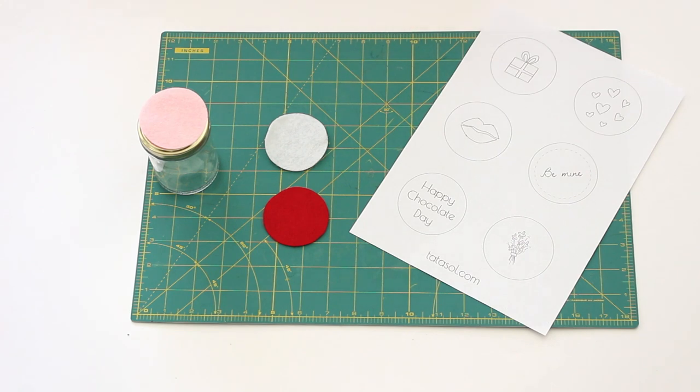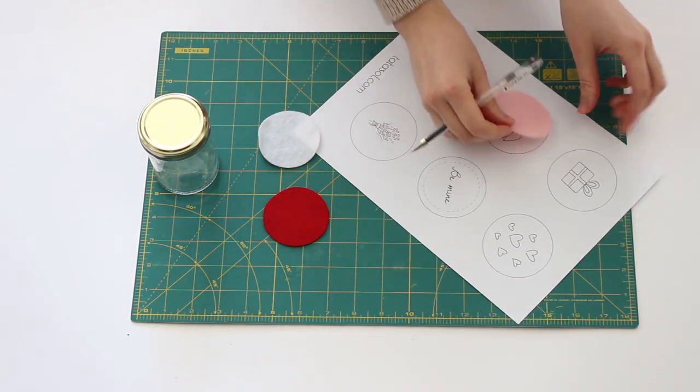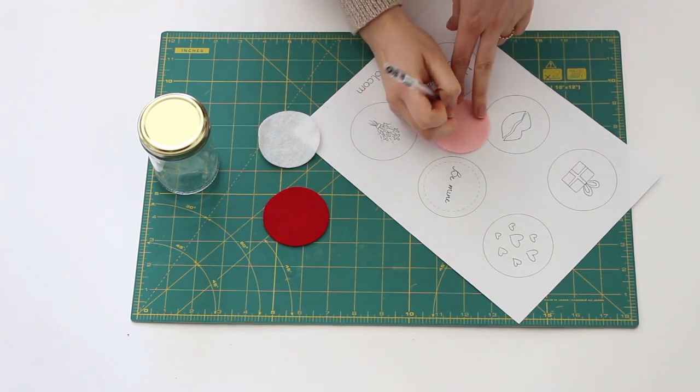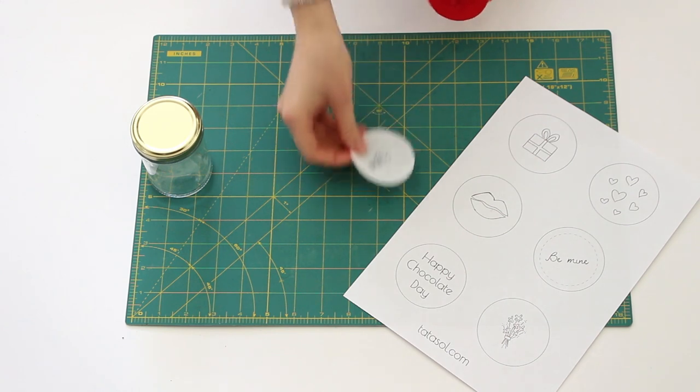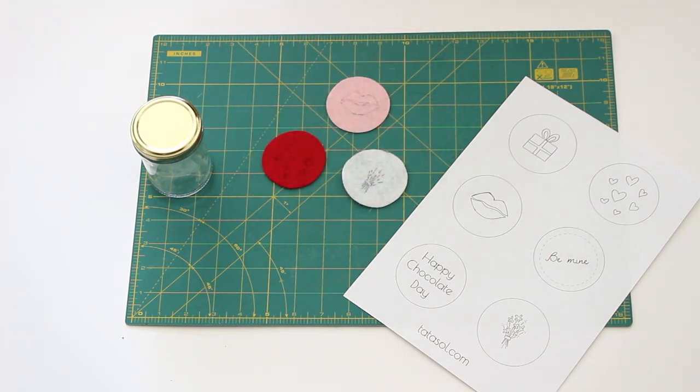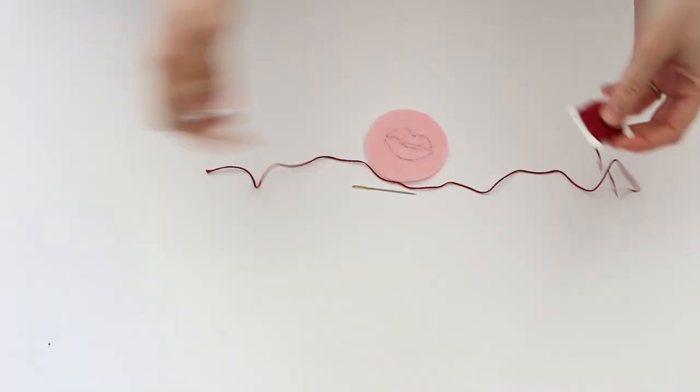Download the free printable from my blog and copy the patterns you like. You can use a window, copy pen, lightbox or just copy the image. I will show you how to stitch three patterns but you can find instructions to all of them in my blog. The link is in the description box. First the lips.